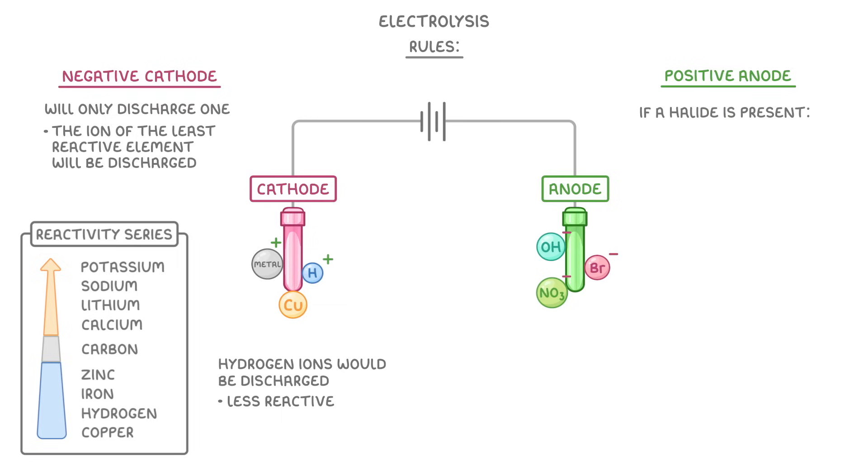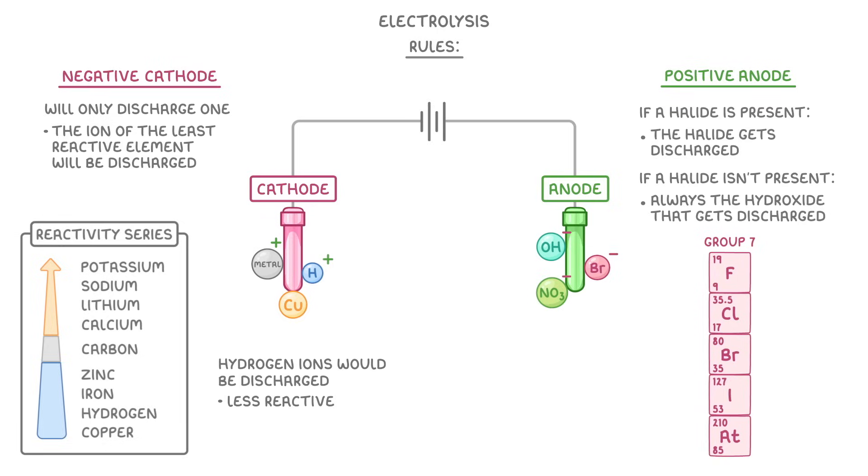If a halide is present, so fluoride, chloride, bromide and so on, then they'll be the one that gets discharged. But if a halide isn't present, then it's always the hydroxide that gets discharged.